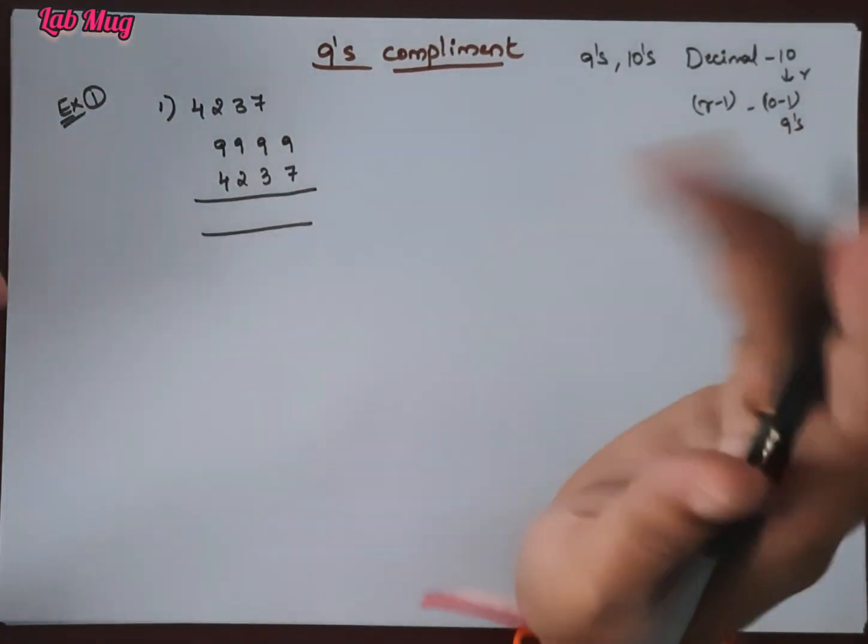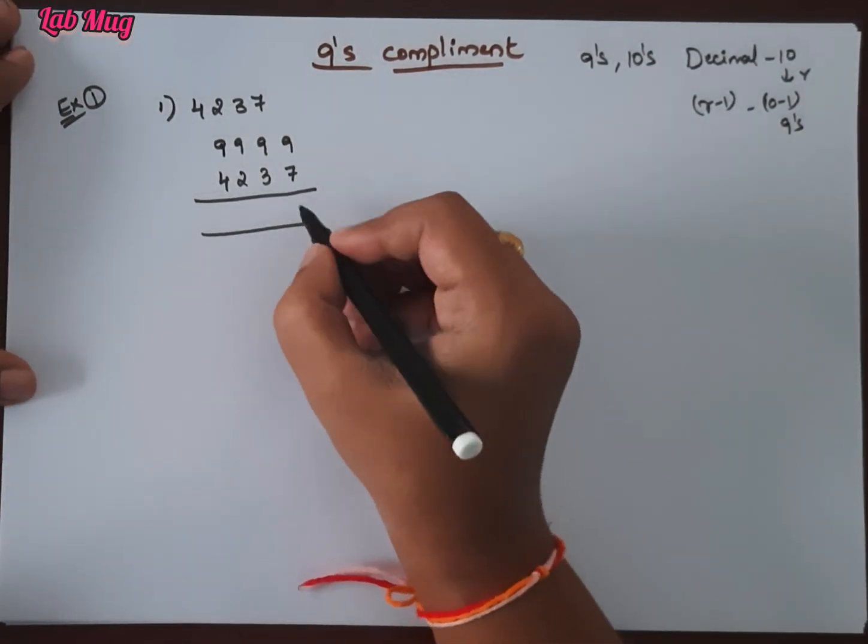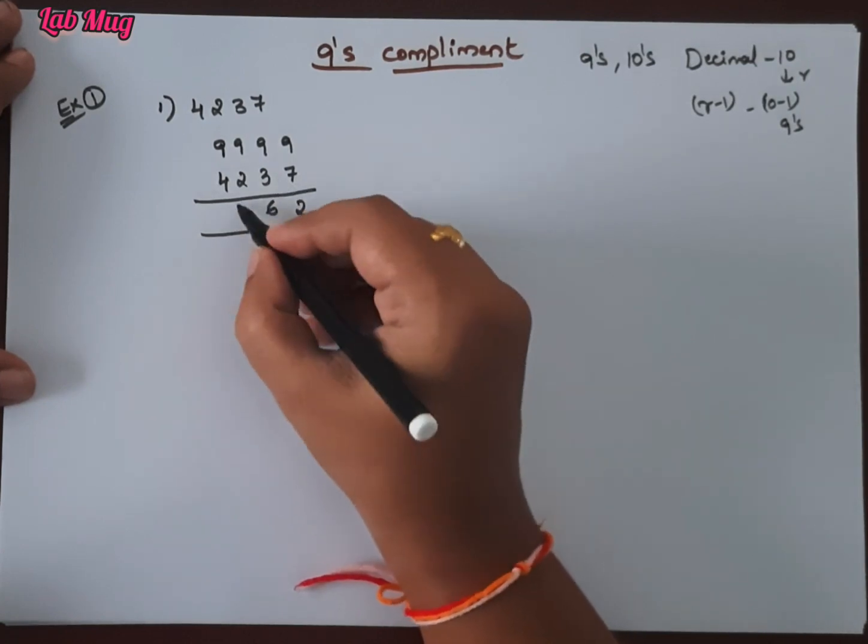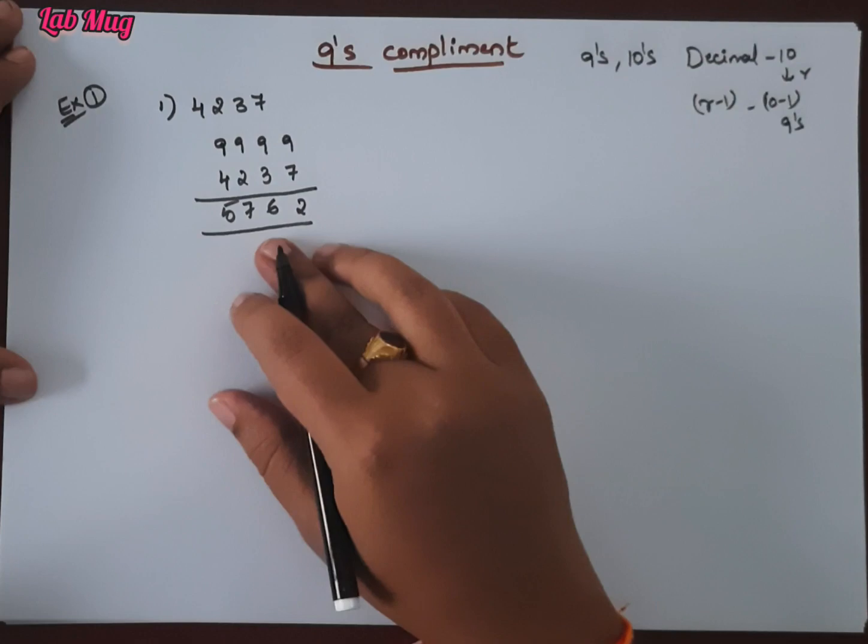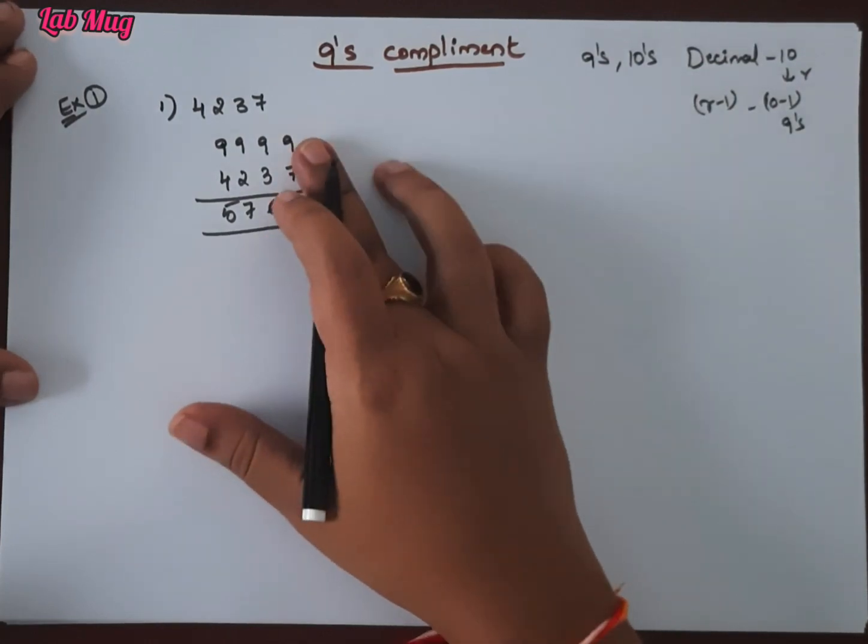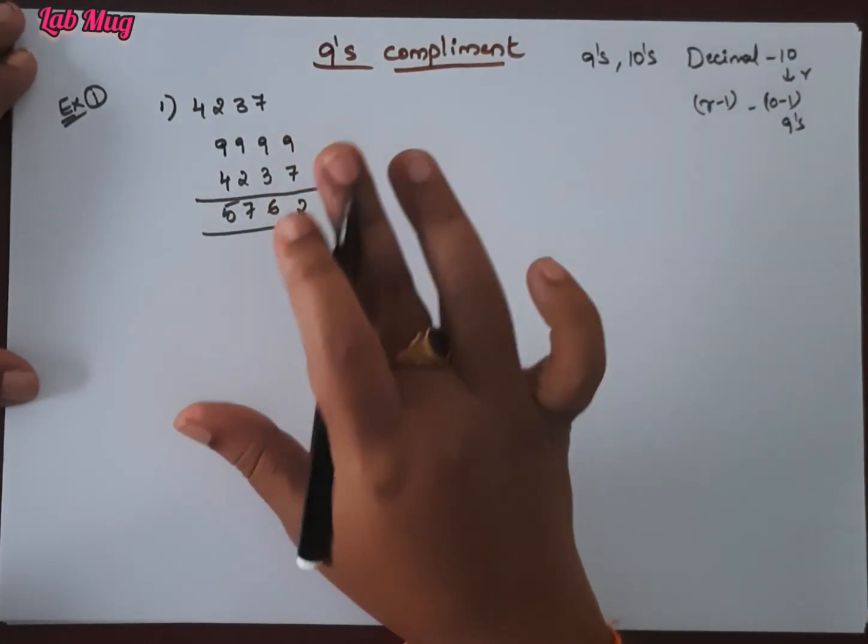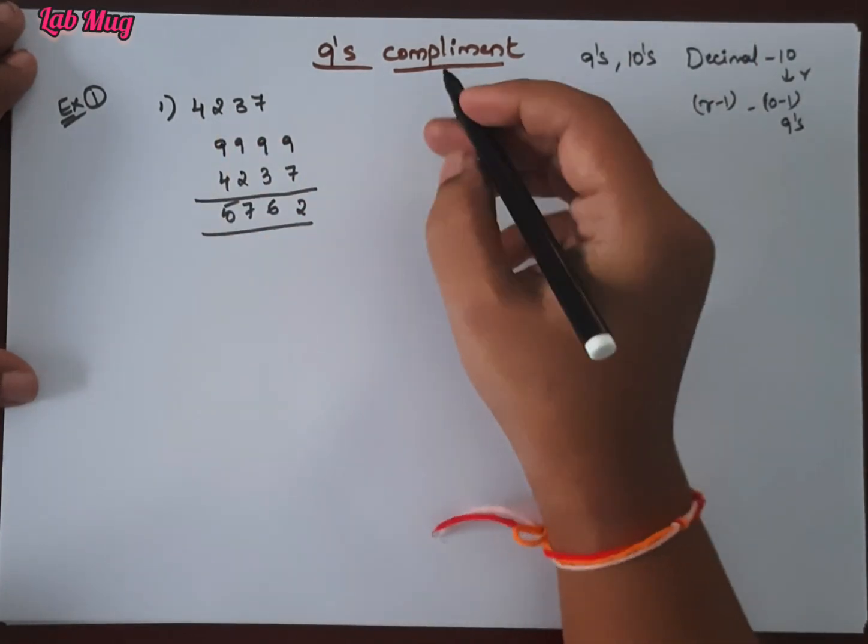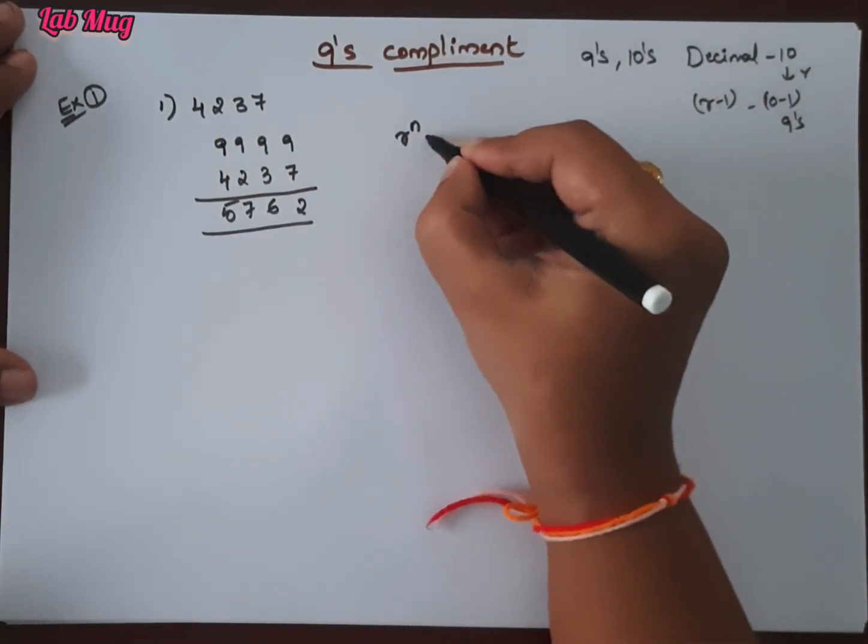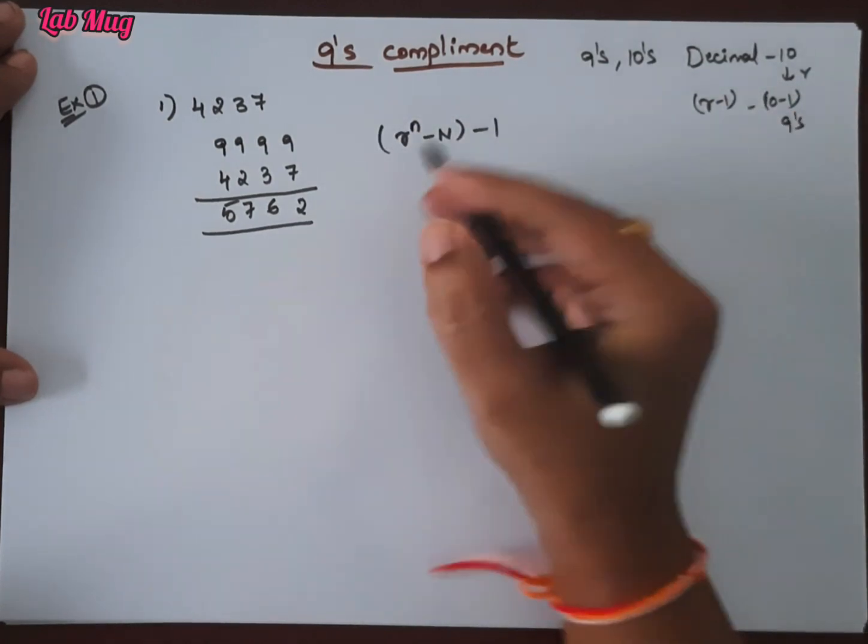So the answer is: 9 minus 7 is 2, 9 minus 3 is 6, 9 minus 2 is 7, and 9 minus 4 is 5. So 5762 is the 9's complement of the given number. Here we will use a formula based approach.